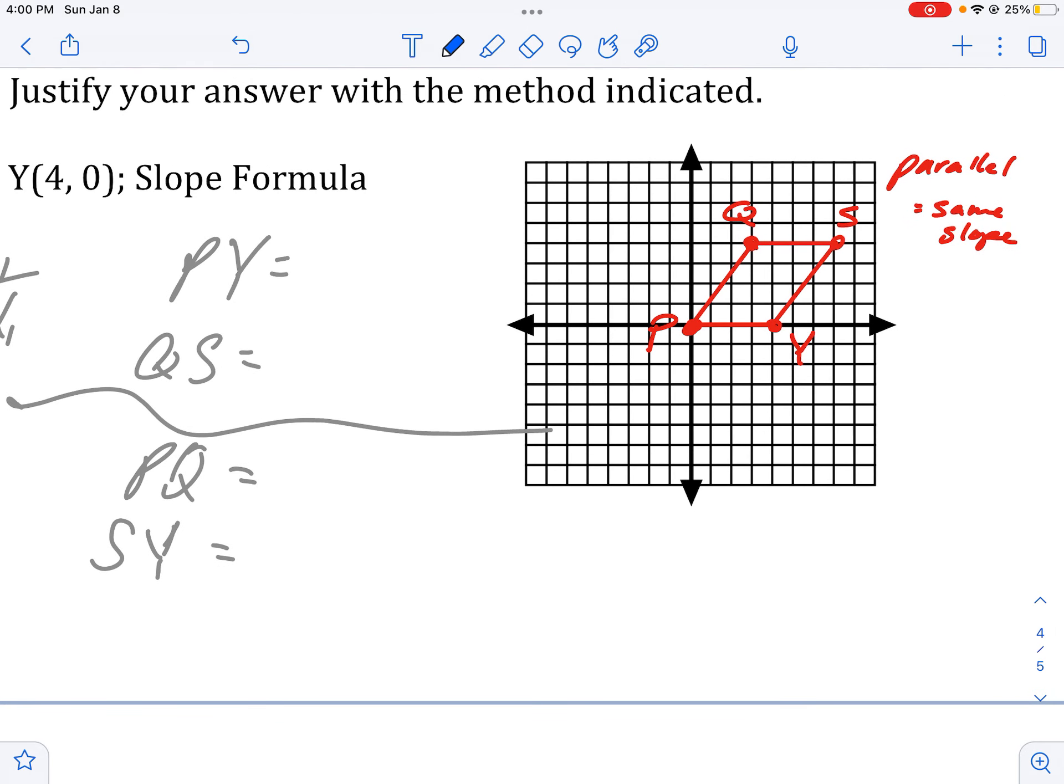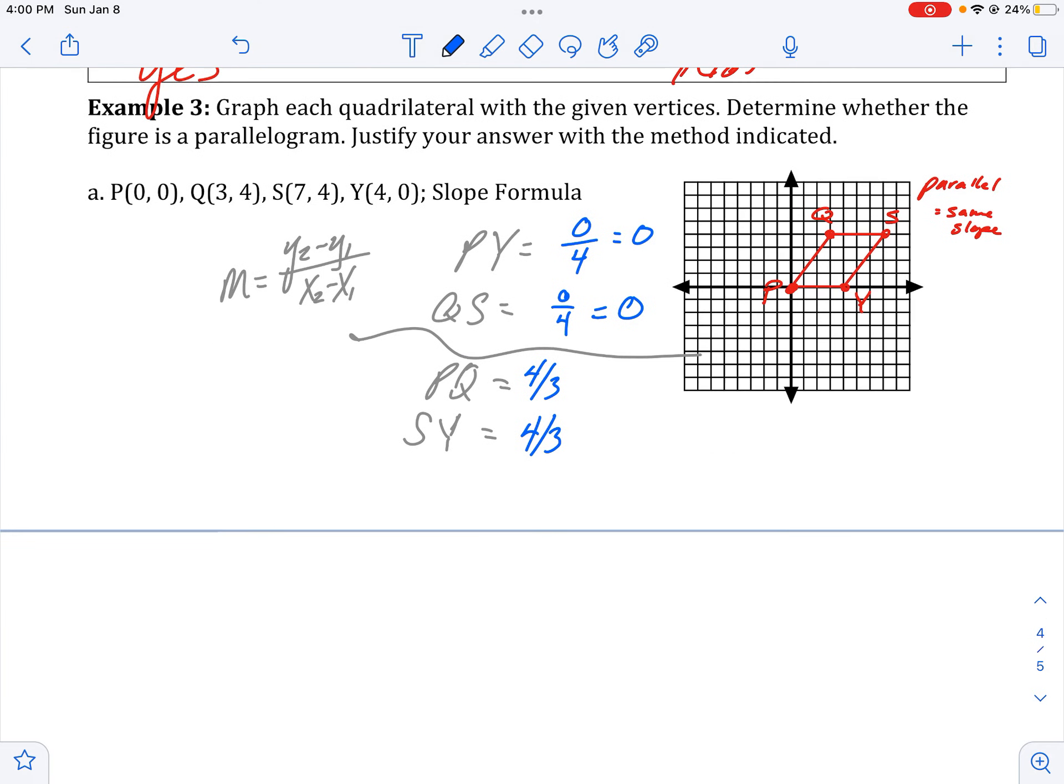Okay, so you should have paused the video and tried it. And PY, QS, you should get 0 over 4 for both, which is just 0. And you can just see that, 3, 0, that makes sense. And PQ and SY, you should get 4 thirds. And since you have two pairs of lines or line segments with the same slope, you have two pairs of parallel lines. So if both pairs of opposite sides are parallel, that is a parallelogram.